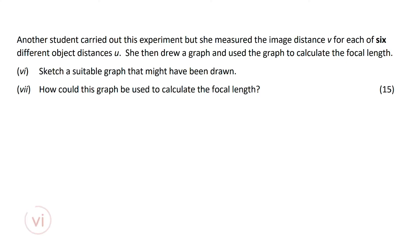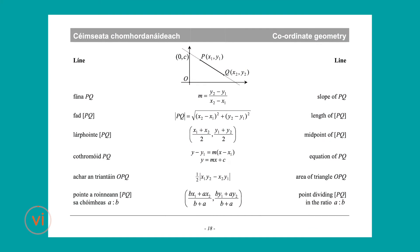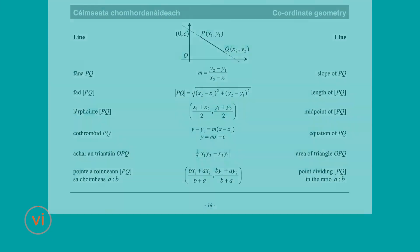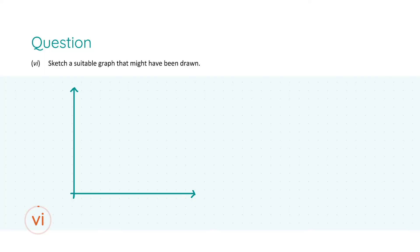In the final part of this question, another student carried out the same experiment and measured the image distance V for each of six different object distances U, then used a graph to calculate the focal length. Before answering, note page 18 of the formula and tables book — the equation of a line formula — as it's relevant here. Part six asks us to sketch a suitable graph; note the word 'sketch', so we just need a rough shape with correct axes.